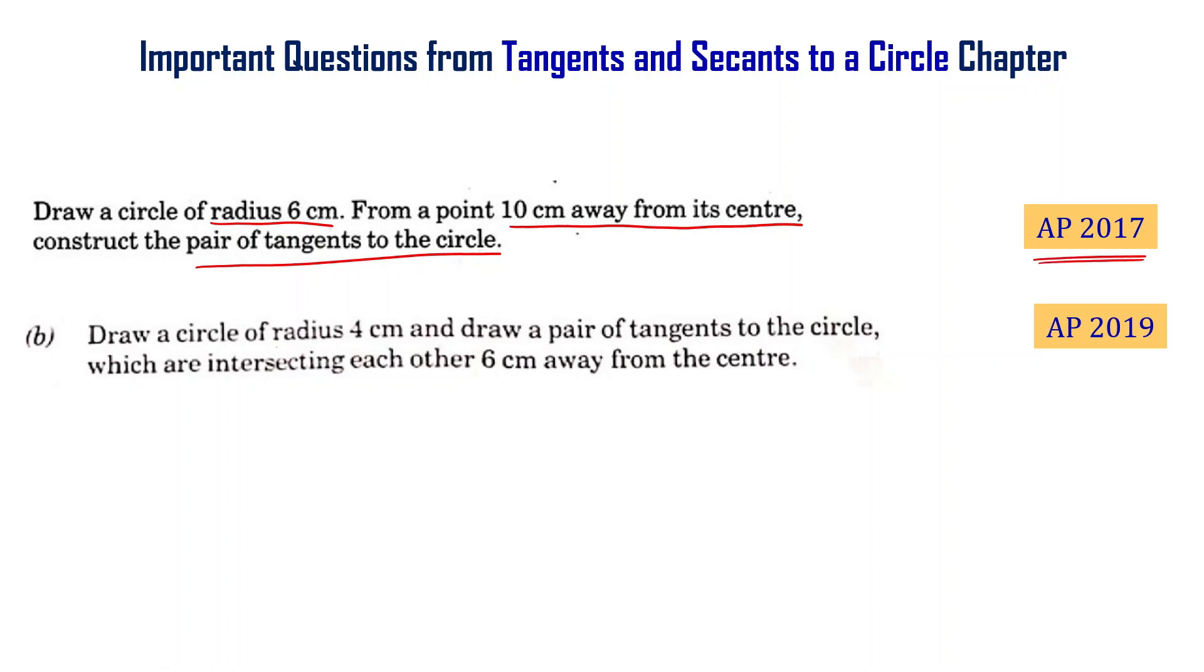Draw a circle of radius 4 cm and draw a pair of tangents to the circle which are intersecting each other 6 cm away from the center. This is the AP Final Exam 2019 lecture.